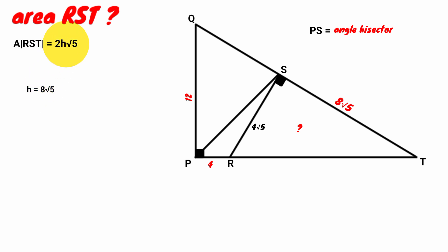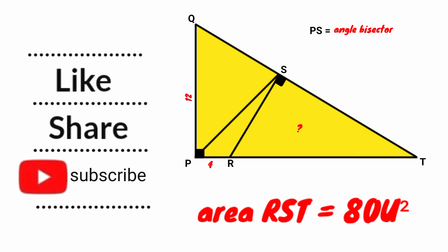Substituting H = 8√5 into the area formula: area = 2 × 8√5 × √5 = 2 × 8 × 5 = 2 × 40 = 80. So the area of triangle RST equals 80 square units. Thank you for watching — please like, share, subscribe, and turn on notifications.